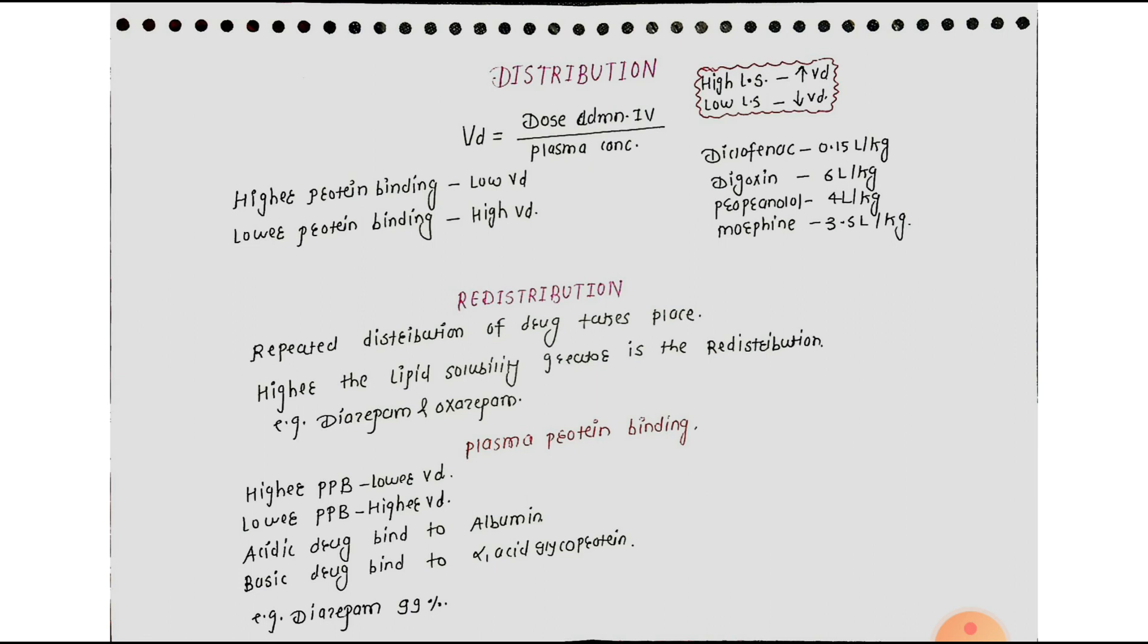The formula is Volume of Distribution is equal to dose administered IV upon plasma concentration. Sir, tell me what is plasma concentration? Student, it is amount of drug present per ml of blood.